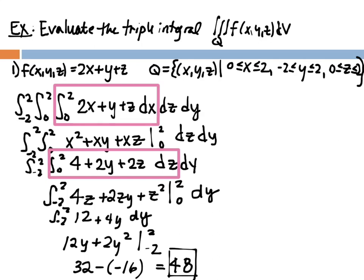For the second integration, the inner integral from 0 to 2 in terms of z is now boxed in pink. Integrating 4 + 2y + z with respect to z gives 4z + 2yz + z², evaluated from 0 to 2, which yields 12 + 4y. We then integrate 12 + 4y with respect to y, giving 12y + 2y², evaluated from -2 to 2. Plugging in 2 and -2, we get 32 minus negative 16, which equals 48.